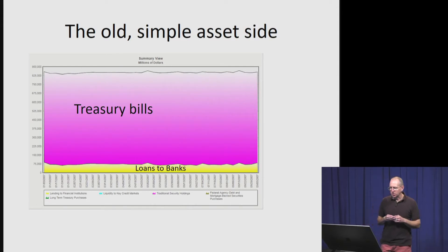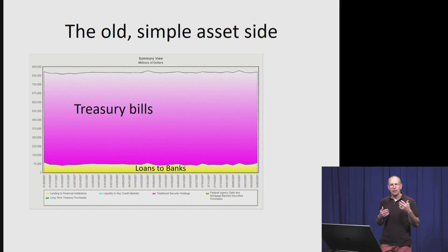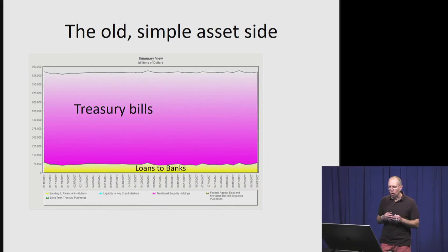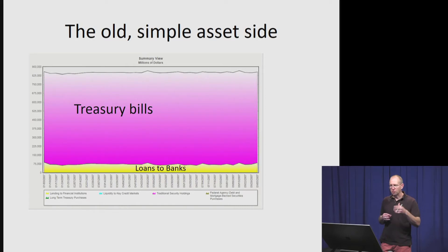You can see it was pretty simple: most of the Fed's balance sheet was made up of run-of-the-mill Treasury bills. Treasury bills have a maturity of one year or less, and then there were loans to banks — discount loans — though those were a fairly modest volume. The Fed's aggregate balance sheet was in the mid-800 billions, and we'll compare how it has changed over time in a future video.